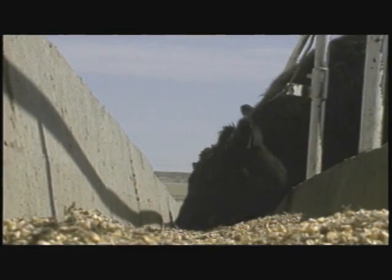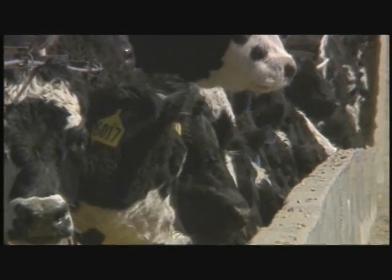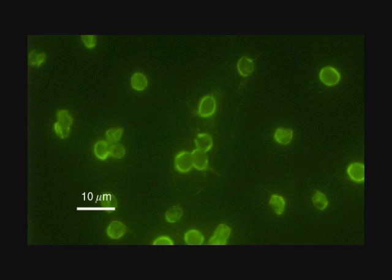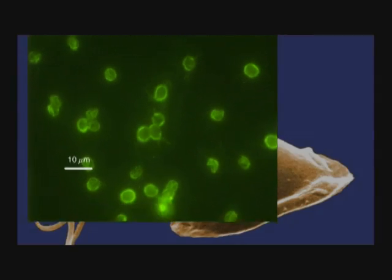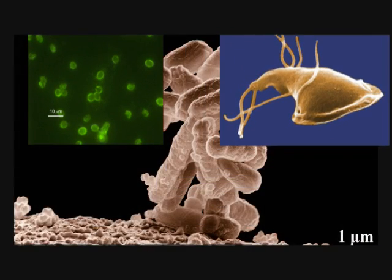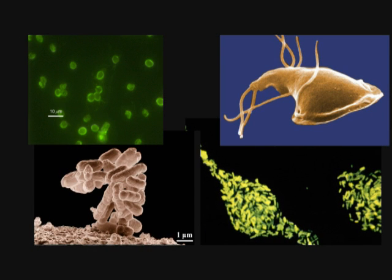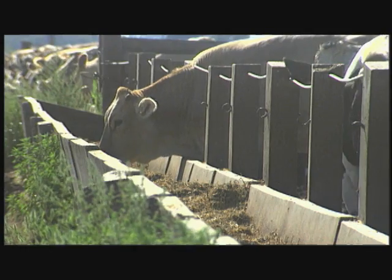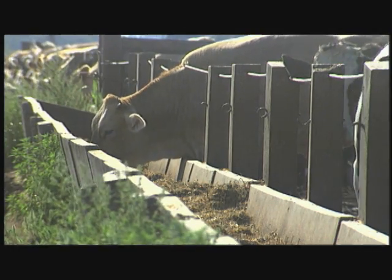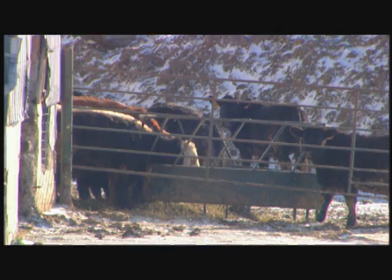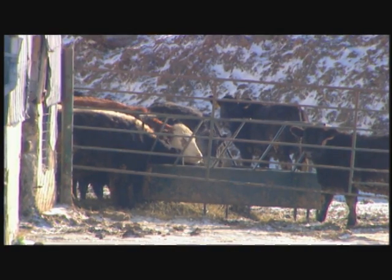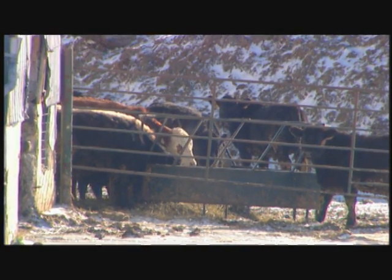Animal waste that finds its way into source water is of particular concern, because it may contain pathogens such as Cryptosporidium, Giardia, E. coli, and Salmonella. These can cause serious gastrointestinal illnesses and even death in humans with weakened immune systems. Animal waste can also contain nutrients that promote growth of potentially undesirable algae and other nuisance plants.